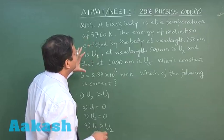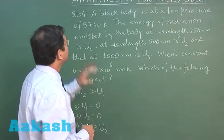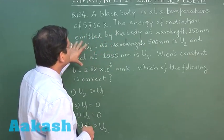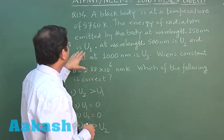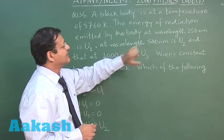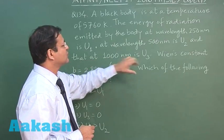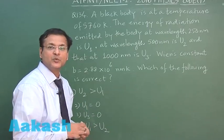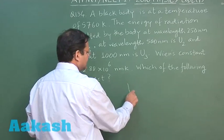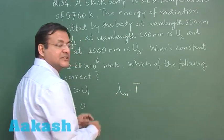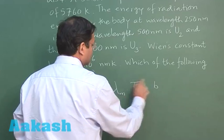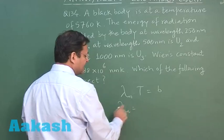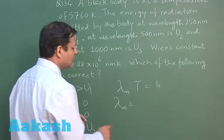Question 134 is based on Wien's displacement law. A black body is at a temperature of 5760 K. The energy of radiation emitted at 250 nm is u1, at 500 nm is u2, and at 1000 nm is u3. The wavelength of maximum energy is given by λm × T = b.